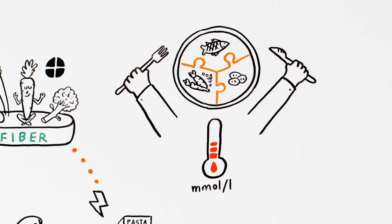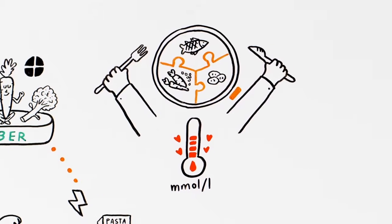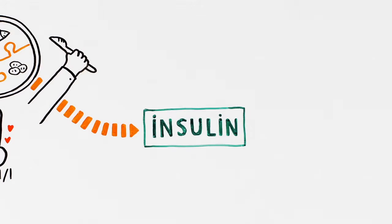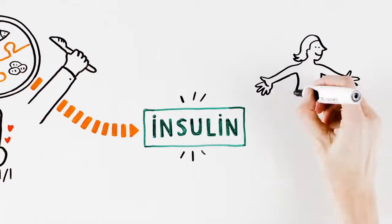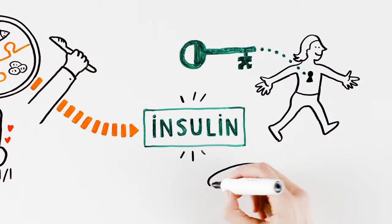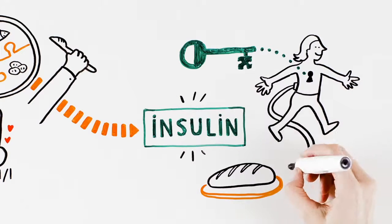In order to use the nutritional value of food, we need insulin. Insulin works like a key in the cells, unlocking the carbohydrates as fuel for your body.